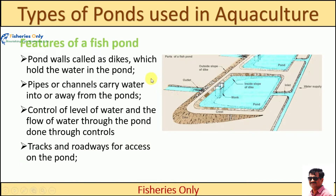The central features of ponds are: pond walls called dikes, which hold the water; pipes or cement-concrete channels used to carry water to or from the pond; control structures to regulate water flow; and tracks or roadways on the crest for accessing the pond during feeding, harvesting, and monitoring.